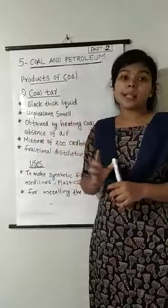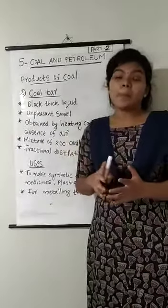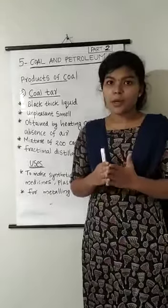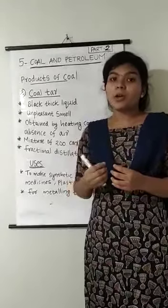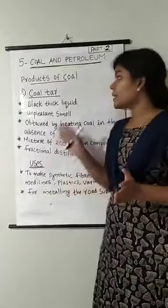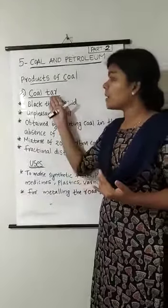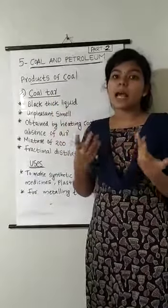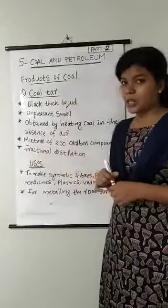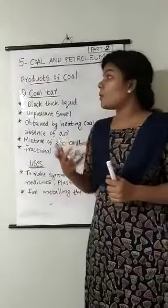Coal-tar is not a single compound — it is a mixture of about 200 carbon compounds like benzene, toluene, naphthalene, etc. You are all familiar with naphthalene balls used at home to repel moths and other insects. Those naphthalene balls are obtained from coal-tar. The various compounds present in coal-tar are separated by the process of fractional distillation, which is a separation technique used to separate various compounds from coal-tar.